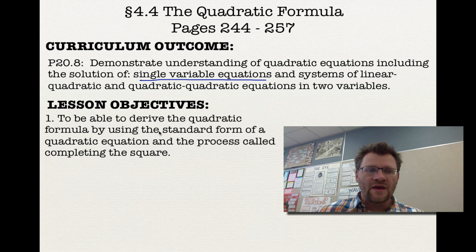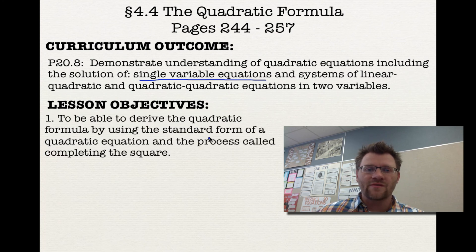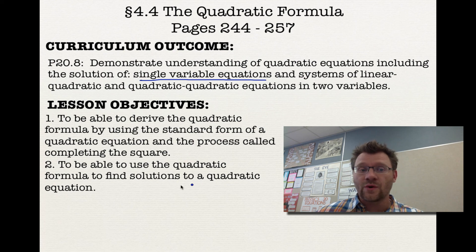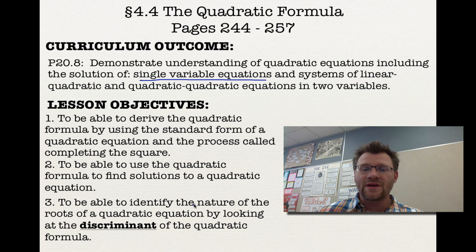Our lesson objectives: number one, to be able to derive the quadratic formula by using the standard form of a quadratic equation and the process called completing the square, which is why we learned that last lesson. Number two, to be able to use the quadratic formula to find solutions to a quadratic equation. And number three, to be able to identify the nature of the roots of a quadratic equation by looking at something called the discriminant of the quadratic formula.